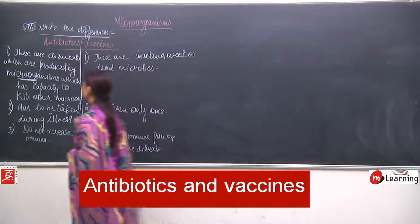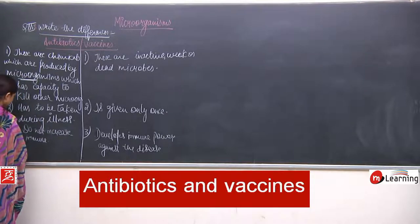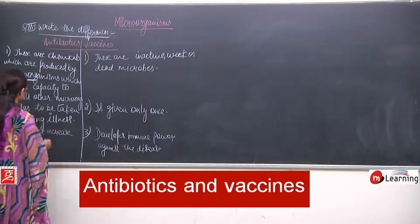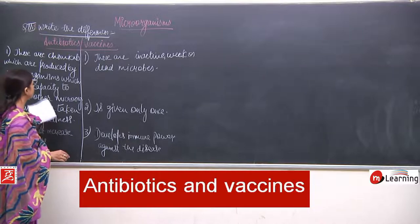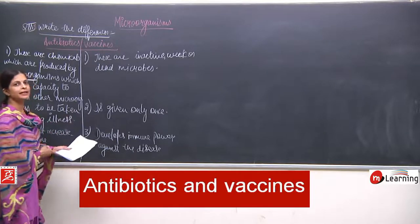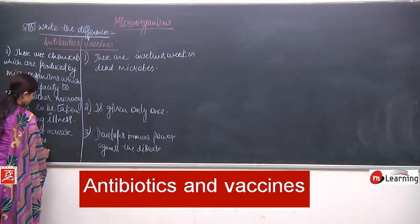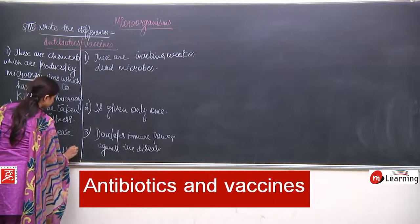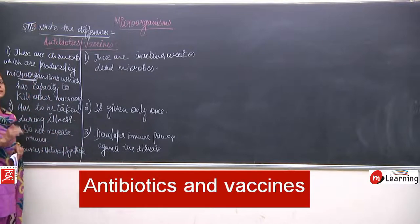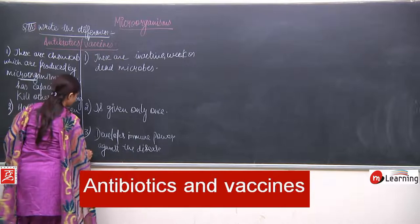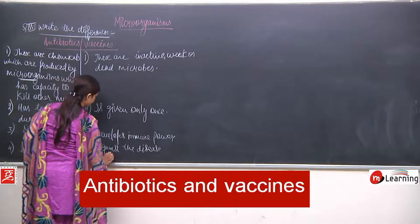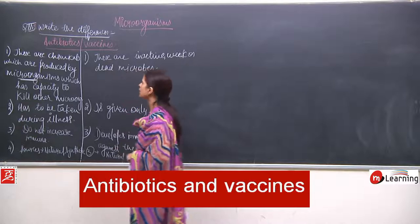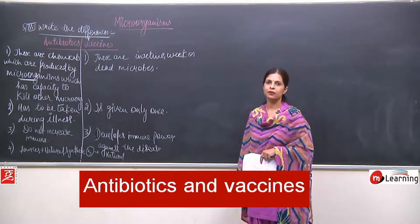Regarding sources: for antibiotics, sources can be natural, synthetic, or even semi-synthetic. For vaccines, the source is obviously natural. These are the major differences between antibiotics and vaccines.